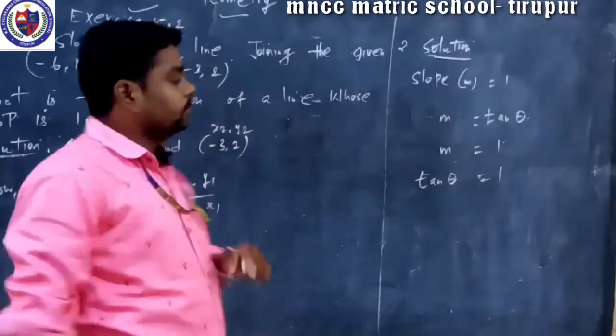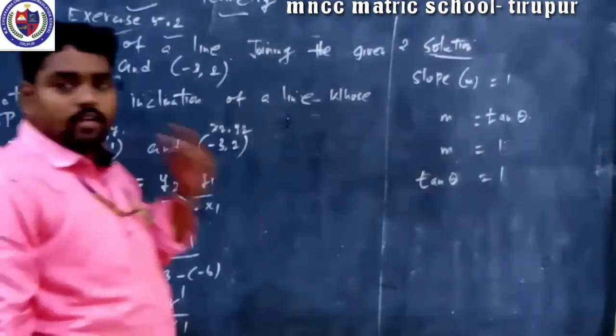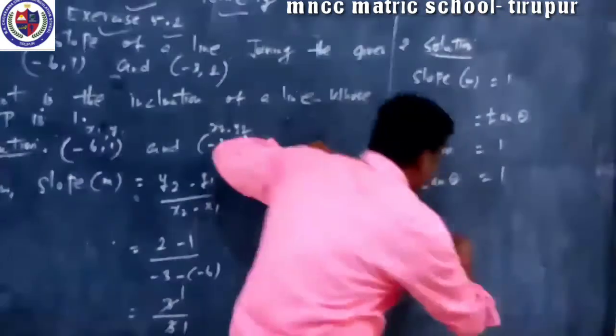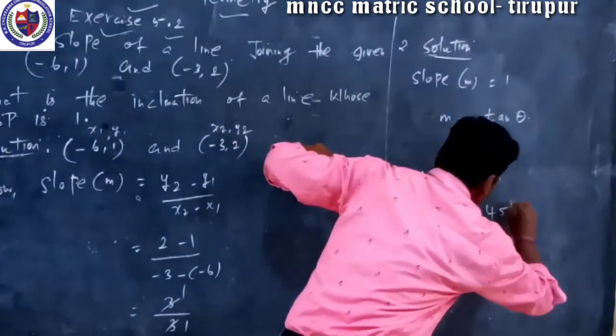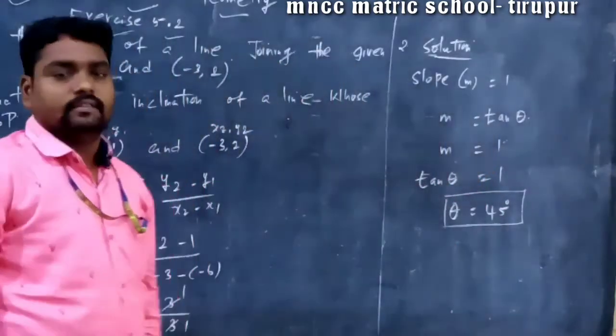Tan angle is equal to 0 degree, 30 degree, 45, 60 and 90. So value is M equal to 1, so only value is equal to 45 degrees. That's it.